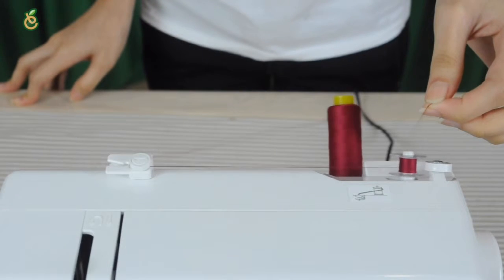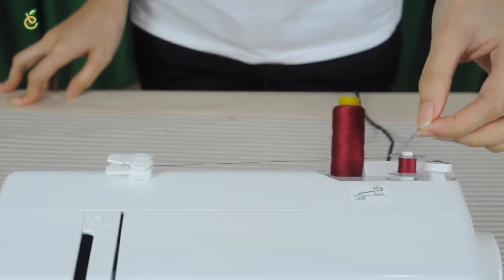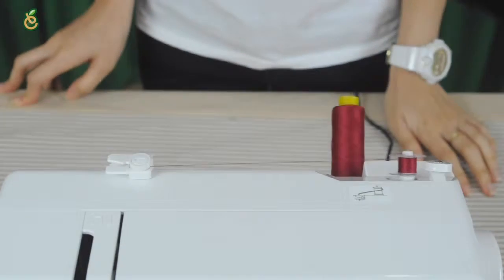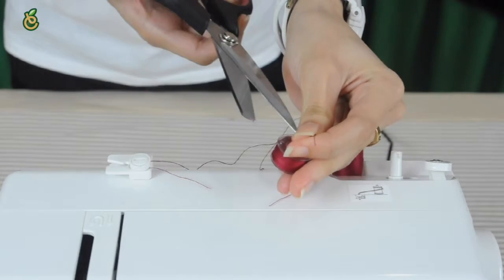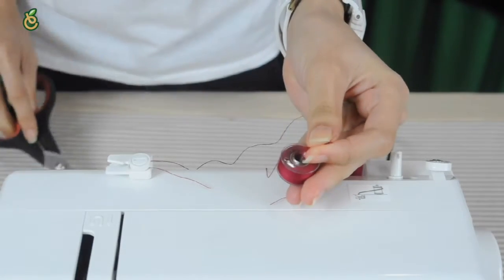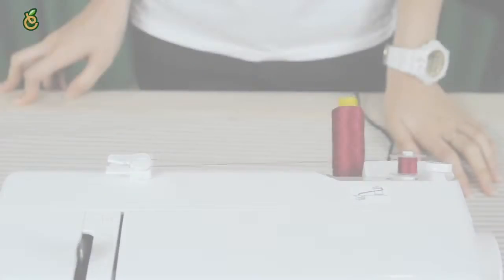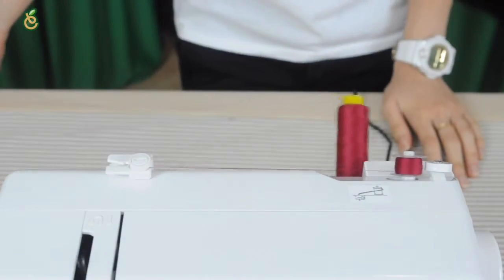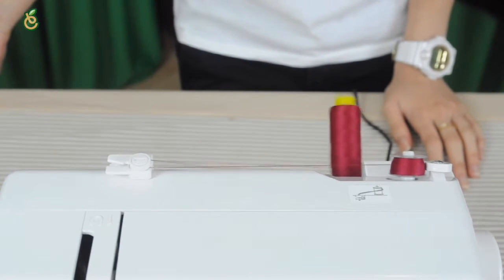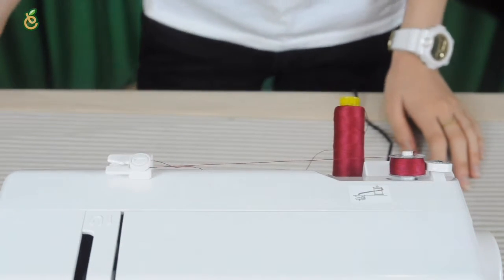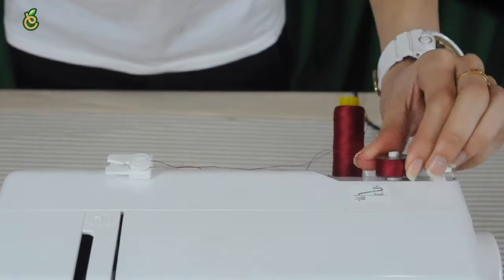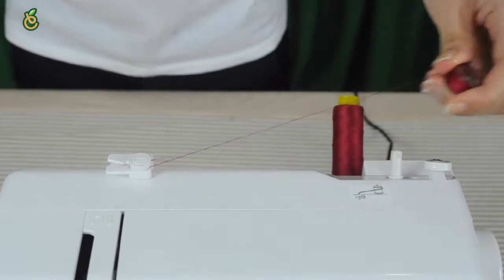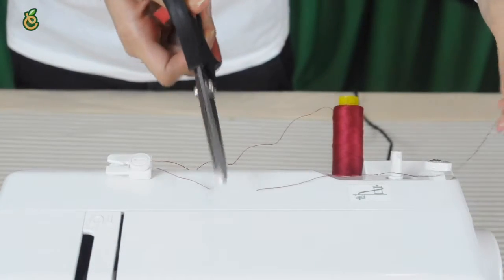After the bobbin has wound for about 10 seconds, stop the machine and cut the thread close to the hole in the bobbin. Depress the foot switch again. When the bobbin is fully wound, it stops automatically. Return the bobbin winder to its original position by moving the spindle to the left and cut off the thread.